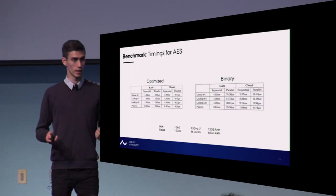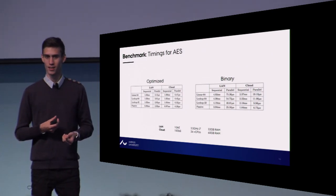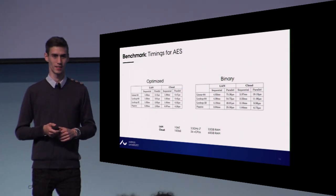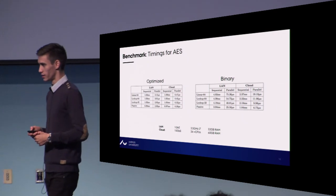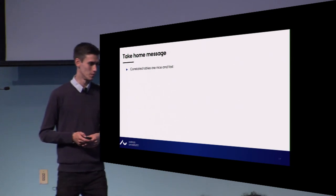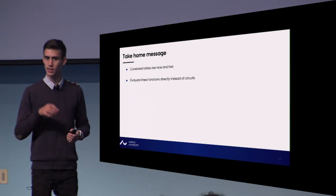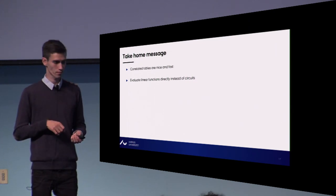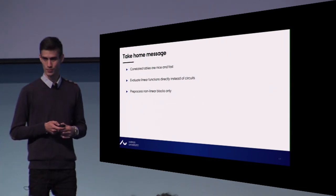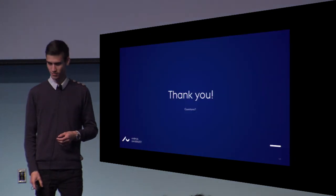To summarize: we simply have a mask, compute on one-time pad encryptions for each wire, and have a scrambled table for each gate. The take-home message is that we like correlated tables. For linear functionalities like in AES, compute them directly on one-time pad encrypted values. And finally, only preprocess the nonlinear blocks. Thank you.